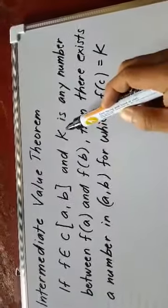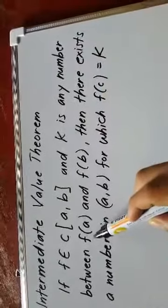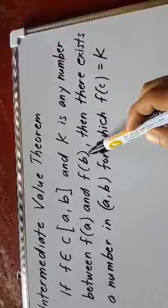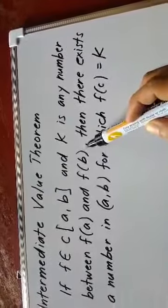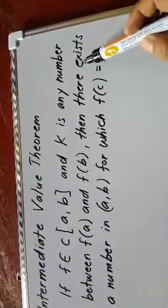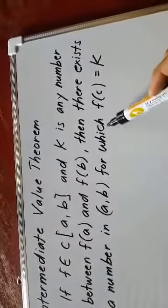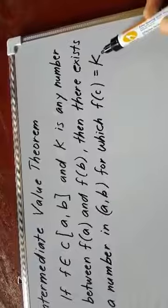then k is a number between f(a) and f(b). If this is the case, then there exists a number in the open interval (a, b) for which f(c) equals k.